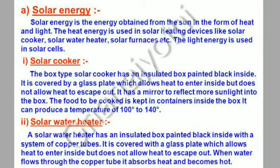A solar cooker can produce a temperature of 100 to 140 degrees Celsius. A solar water heater has an insulated box painted black inside with a system of copper tubes. It is covered with a glass plate which allows heat to enter but does not allow heat to escape out. When water flows through the copper tubes, it absorbs heat and becomes hot.